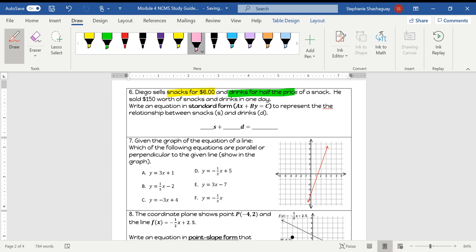So $150 total. We're going to write an equation in standard form to represent the relationship between snacks S and drinks D and how it relates to the $150. This here is going to be my total.